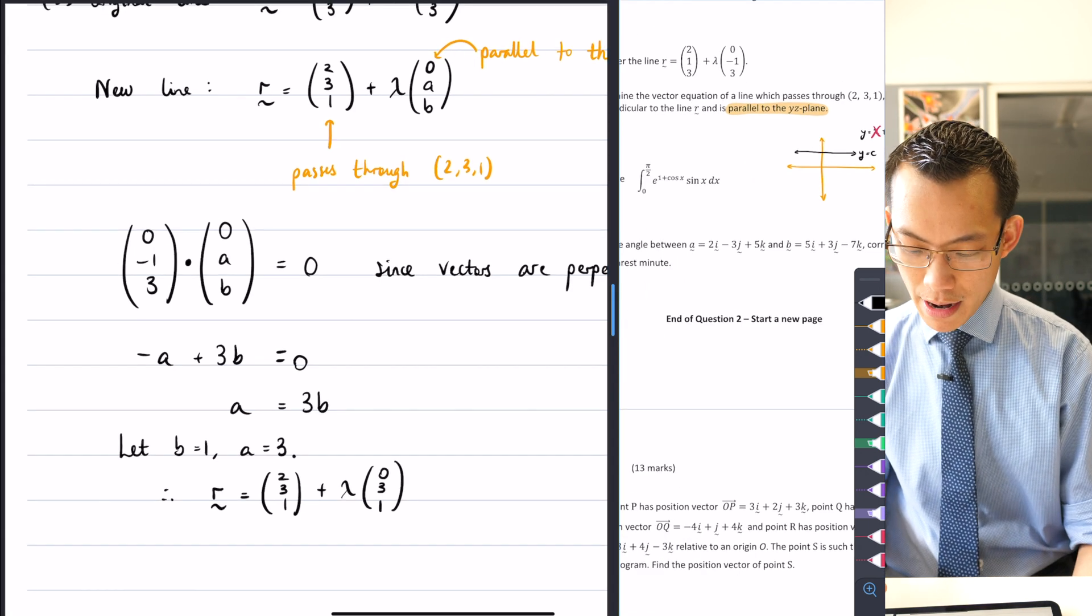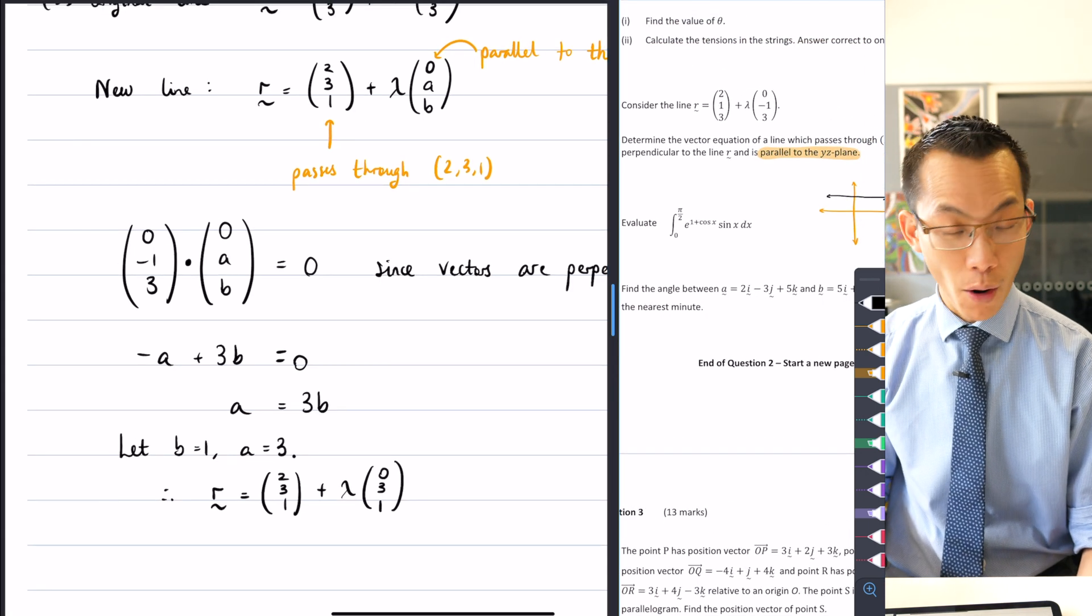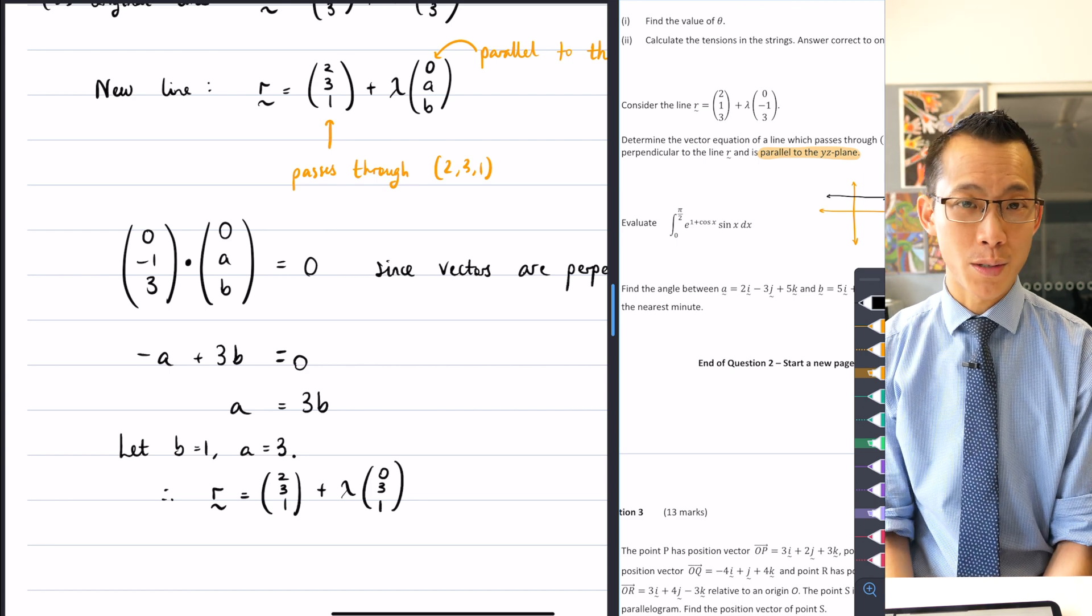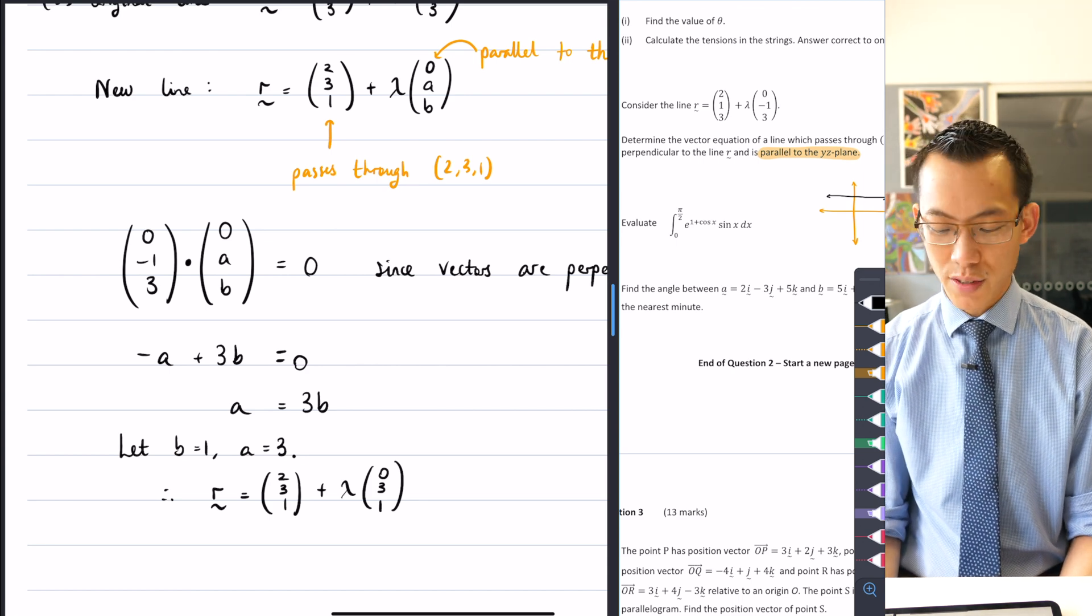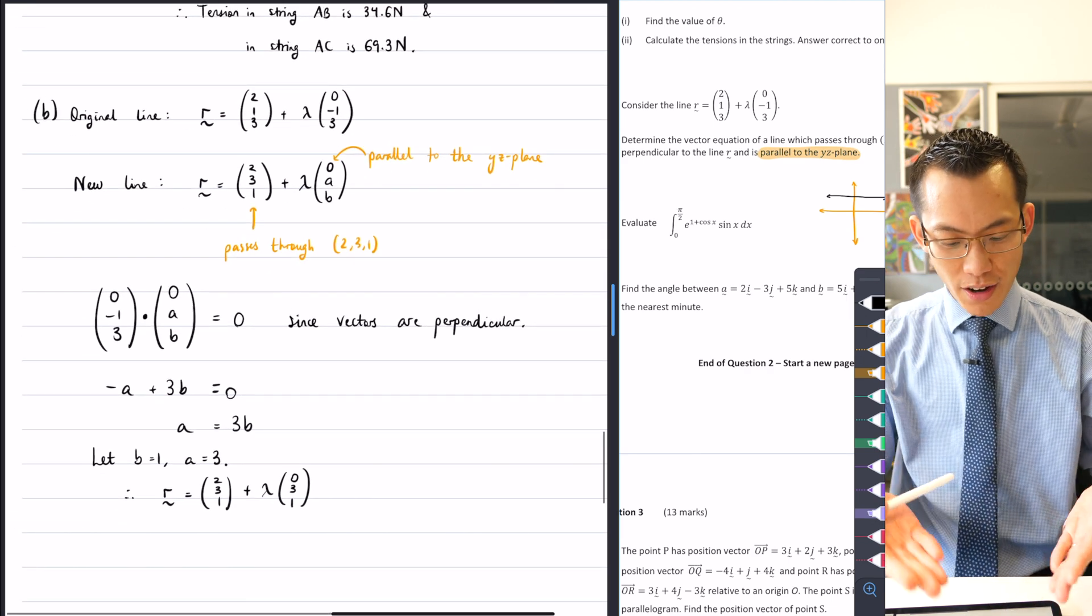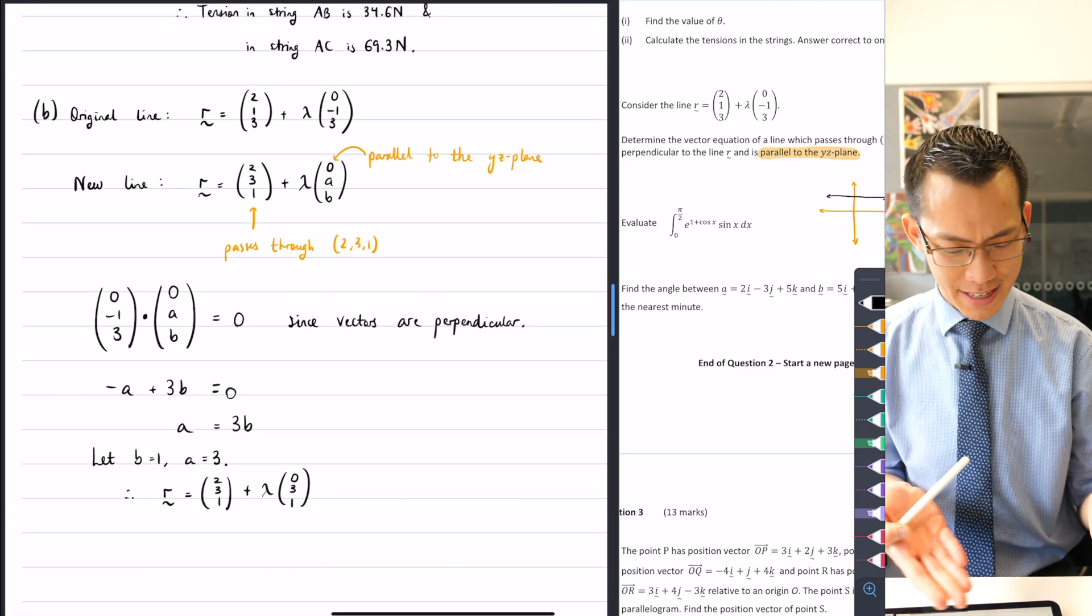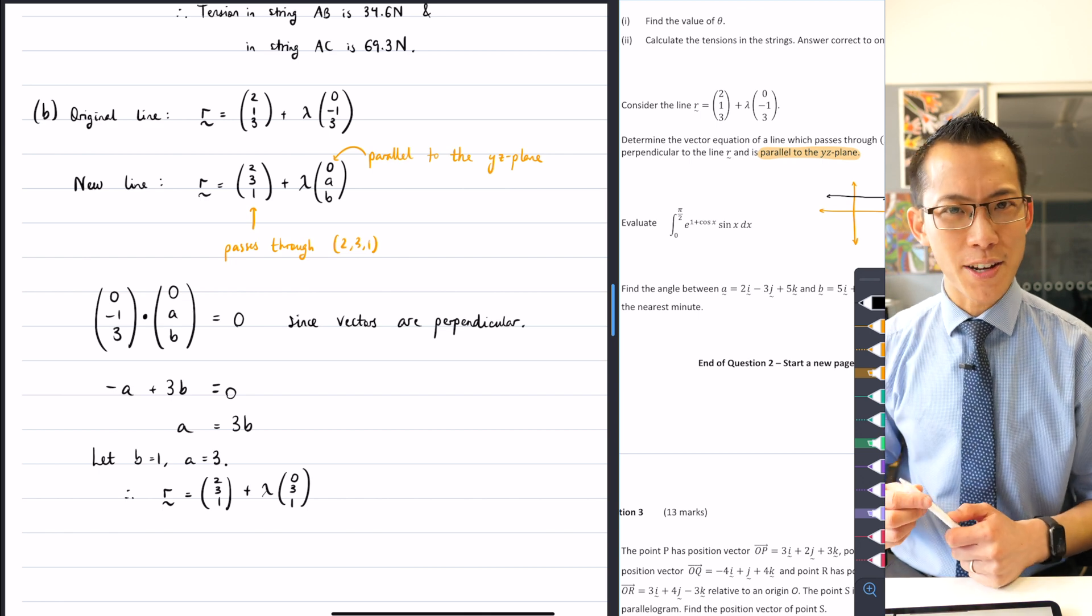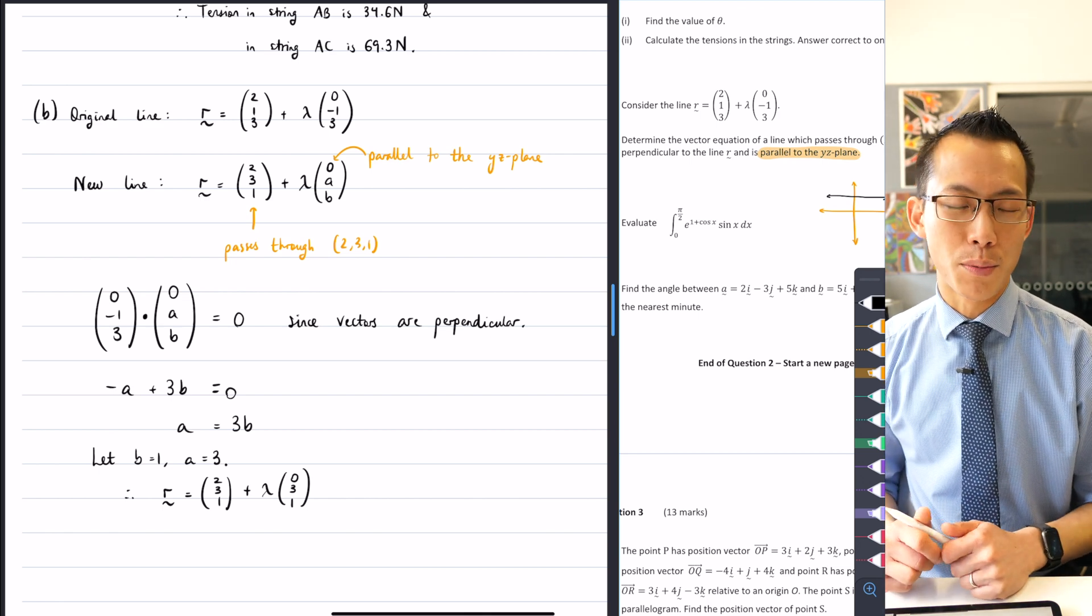I suppose I could write that in component form, but the original line was given to us in column form, so I'm pretty satisfied with that. So please be mindful, like the hard part of this, this is not a hard question to compute, you can see. There's hardly any working compared to some of the early questions we've been looking at, but it's really the thinking that you needed to employ.